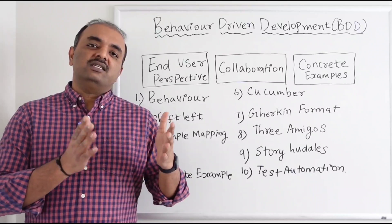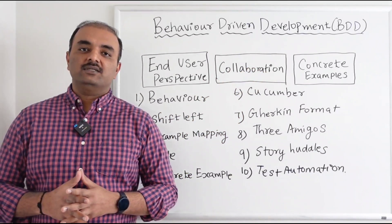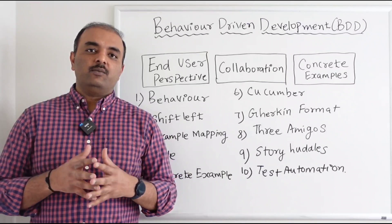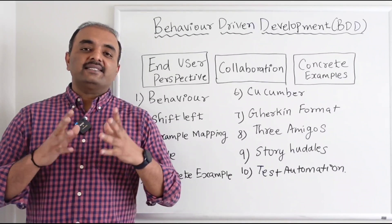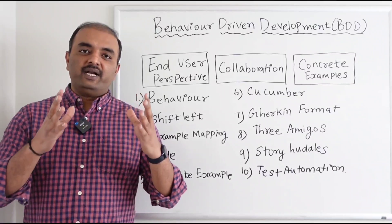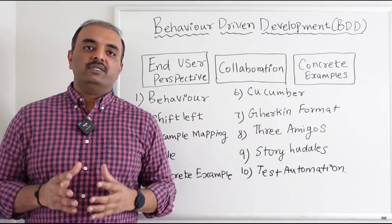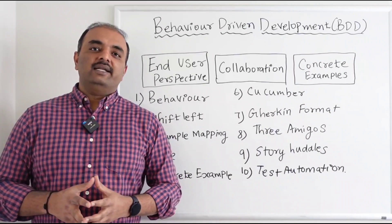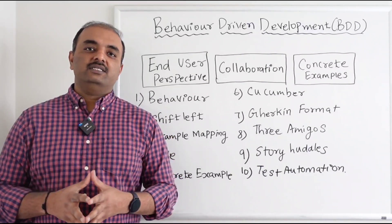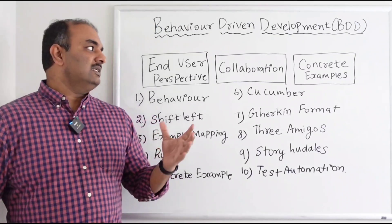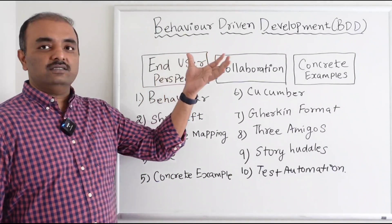During the initial stages of the project, the third thing is concrete examples. When the team discusses about a behavior, they come up with concrete examples — they take the requirement, break it into a rule, and from the rule they come up with concrete examples. Those examples are then documented in the Gherkin format, which is Given, When, Then. That's the overall overview about the BDD concept.